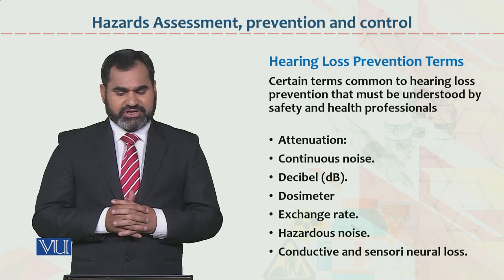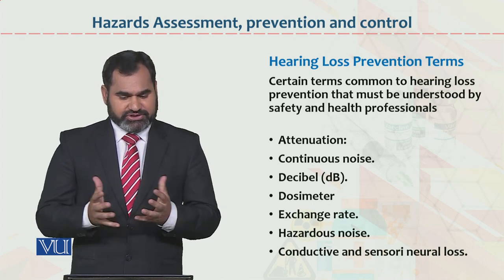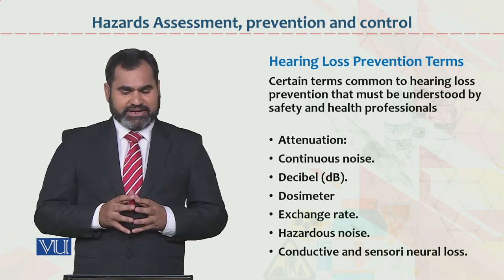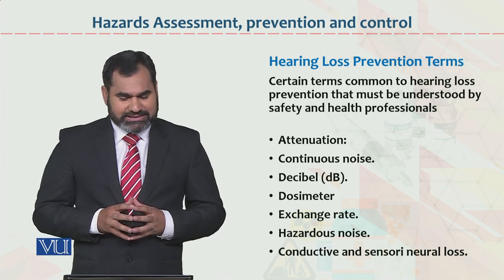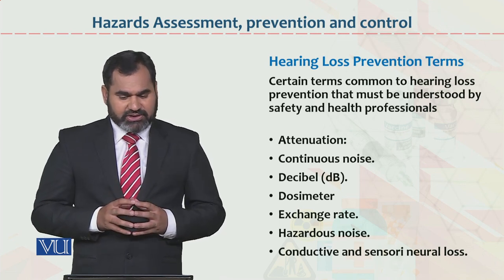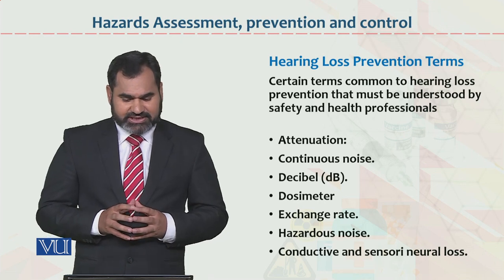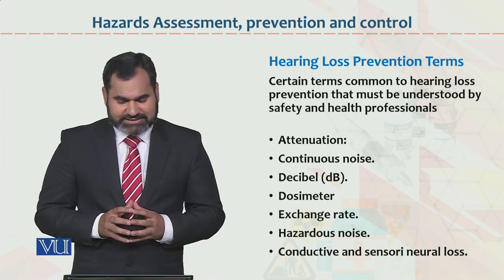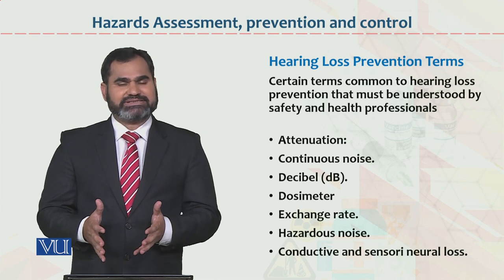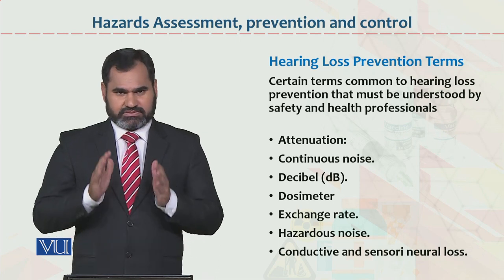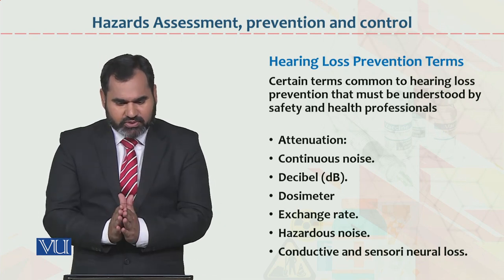Hearing loss prevention terms. Certain terms common to hearing loss are these: attenuation, continuous noise, decibel, dosimeter, exchange rate, hazardous noise, conductive and sensorineural loss. These terminologies are used by health professionals and those who can understand the safety environment.